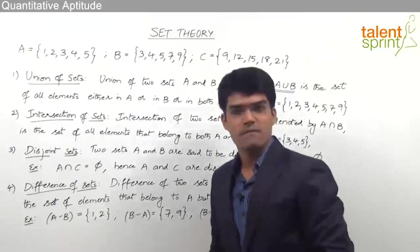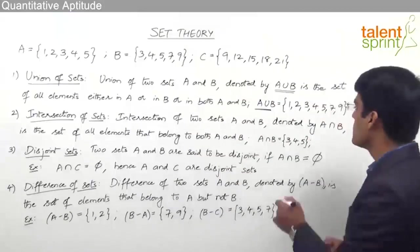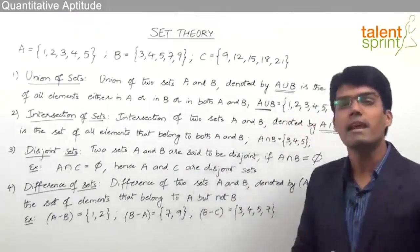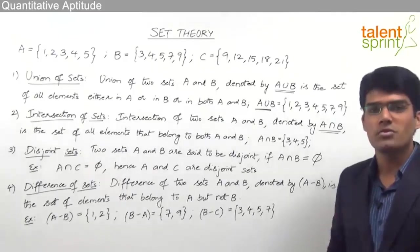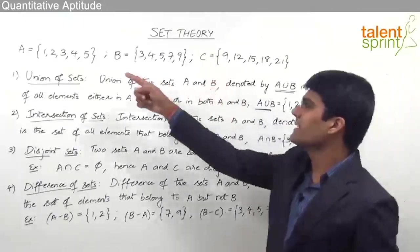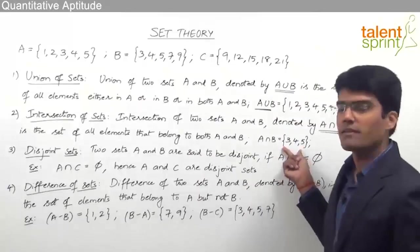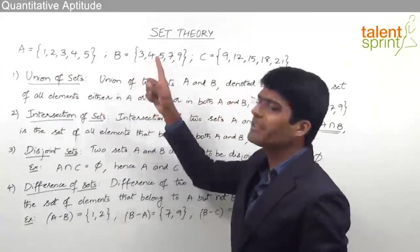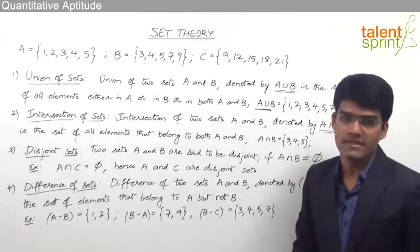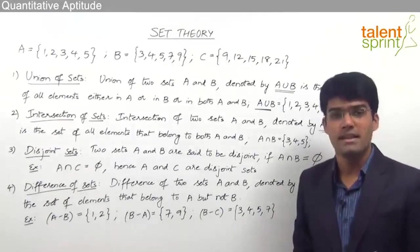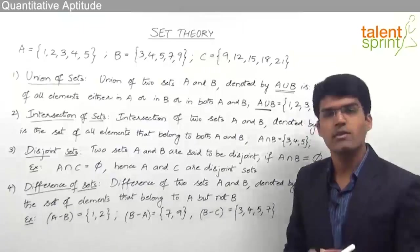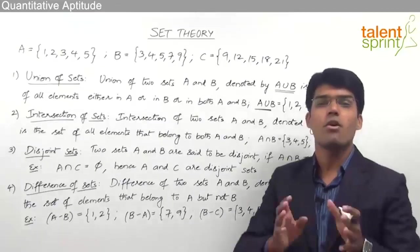The next operation is the intersection of sets. The intersection of two sets A and B, denoted by A ∩ B, is the set of all elements that belong to both A and B. So when we take A ∩ B, we consider only those elements present in both A and B. For the given sets A and B, A ∩ B equals {3, 4, 5} because 3, 4 and 5 are the elements present in both A and B. Likewise, we can find the intersection of three sets A ∩ B ∩ C, taking only those elements present in all three sets.